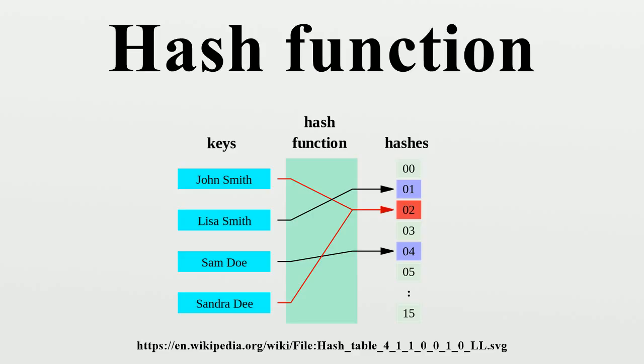Defined range. It is often desirable that the output of a hash function have fixed size. If, for example, the output is constrained to 32-bit integer values, the hash values can be used to index into an array. Such hashing is commonly used to accelerate data searches.